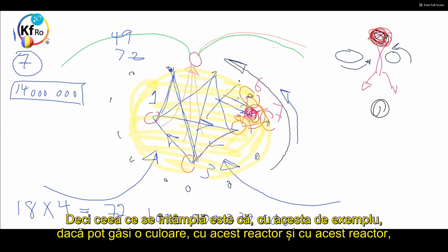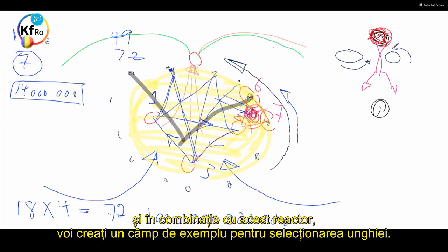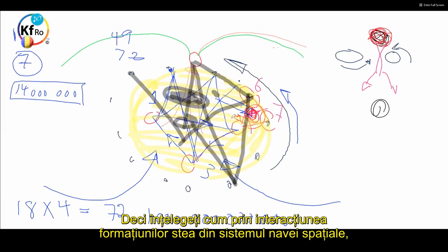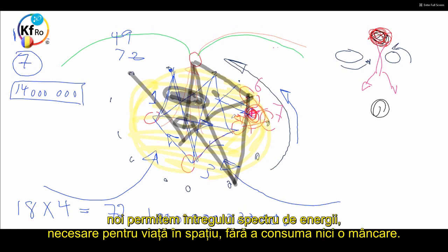So what happens is that with this reactor and this reactor and a combination with this reactor, you create a field, for example, for the cell in your nail. With this reactor, with this reactor again, you create something for something else. So you understand how, through the introduction of the Star Formation and the Space-Ship system, we allow the total spectrum of the energies needed for life in Space without consuming any food.